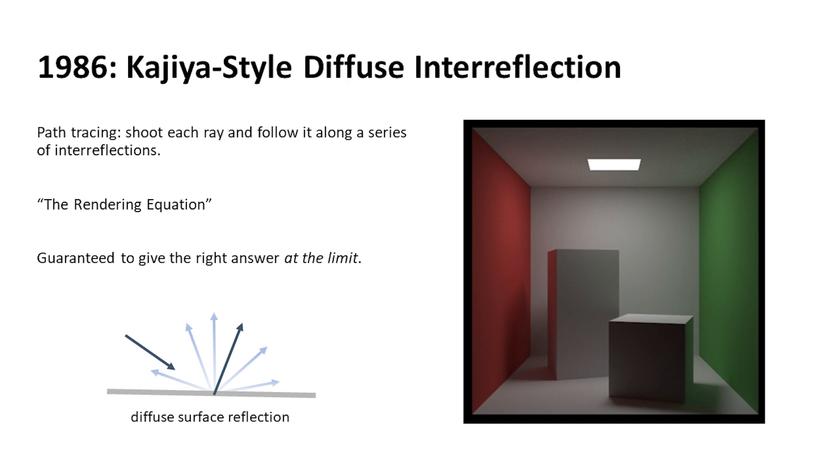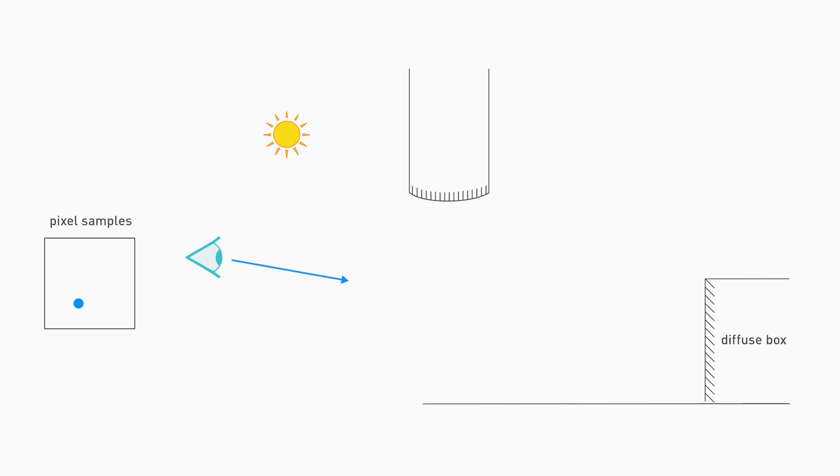Here's path tracing where we shot one ray through our pixel in one particular location. It hits this box, and we shoot a secondary ray in some direction, and it goes off to the sky.